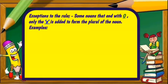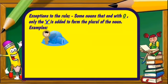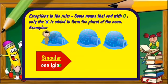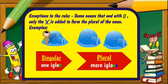Now here are the exceptions to the rule. Some nouns that end with O, only the S is added to form the plural. Example: we have igloo — one igloo. Plural: more igloos. To form the plural of igloo, we just add S.